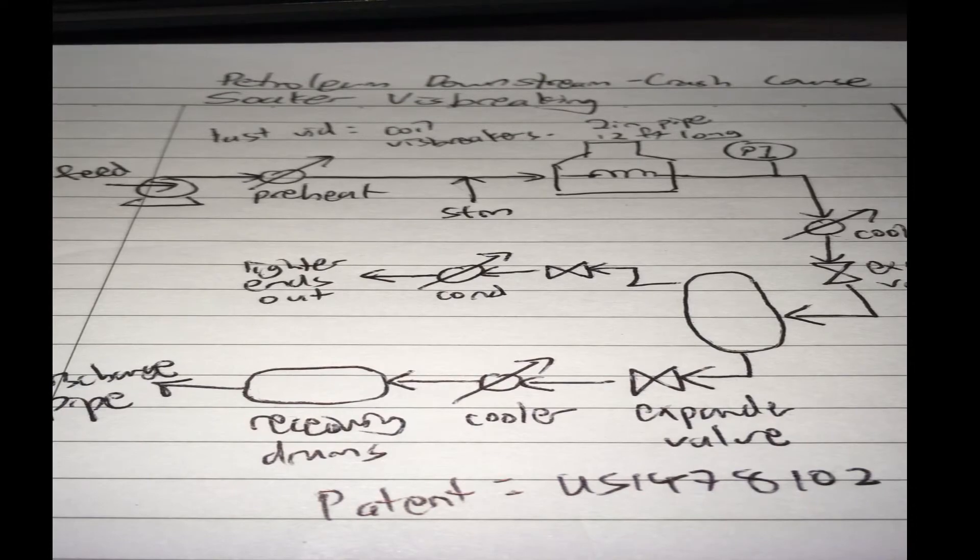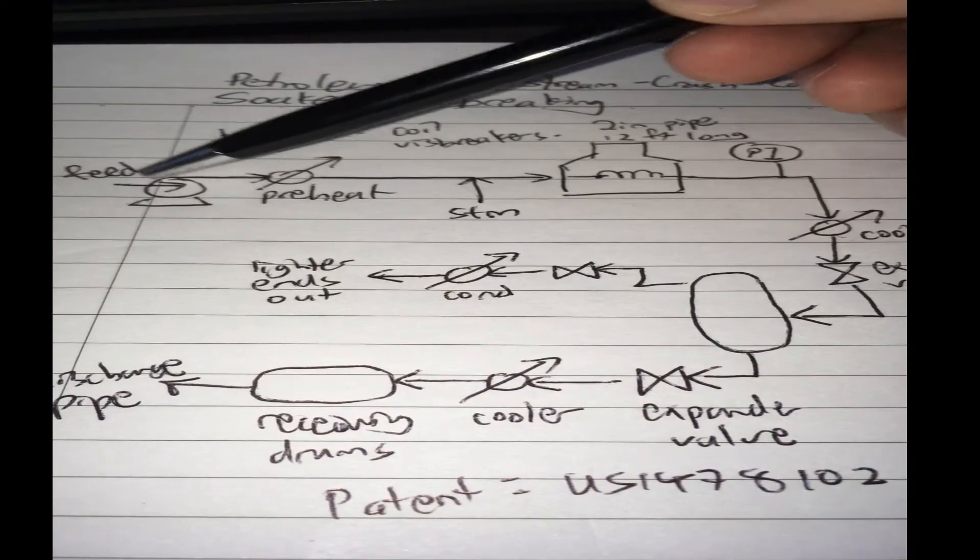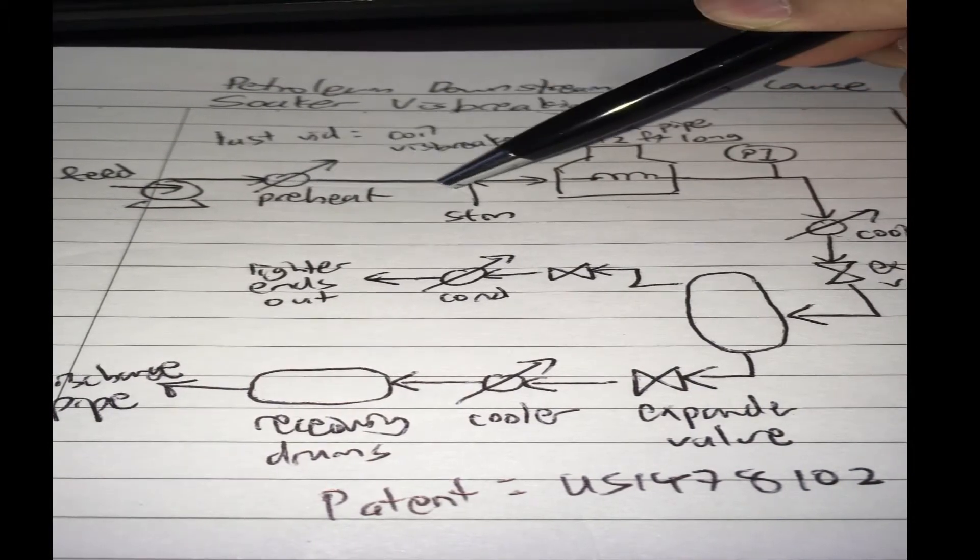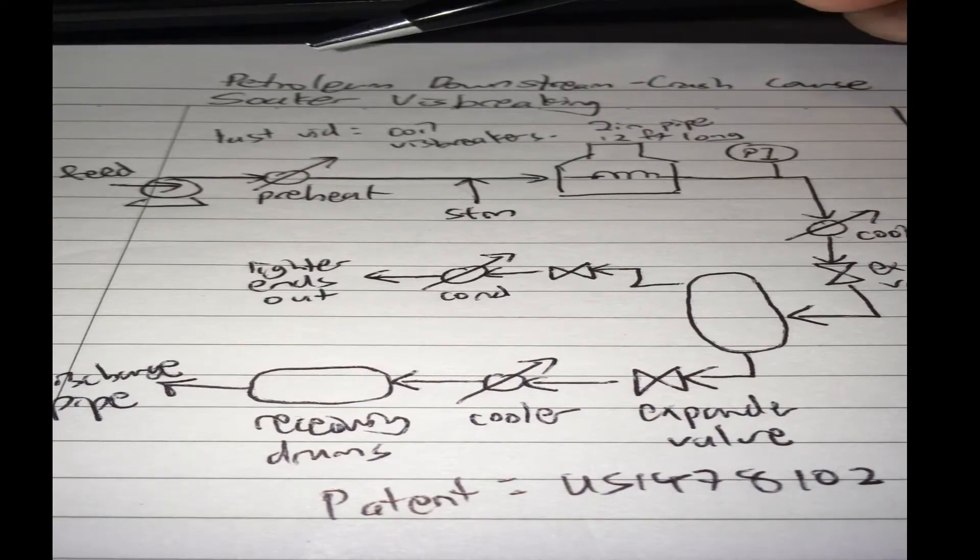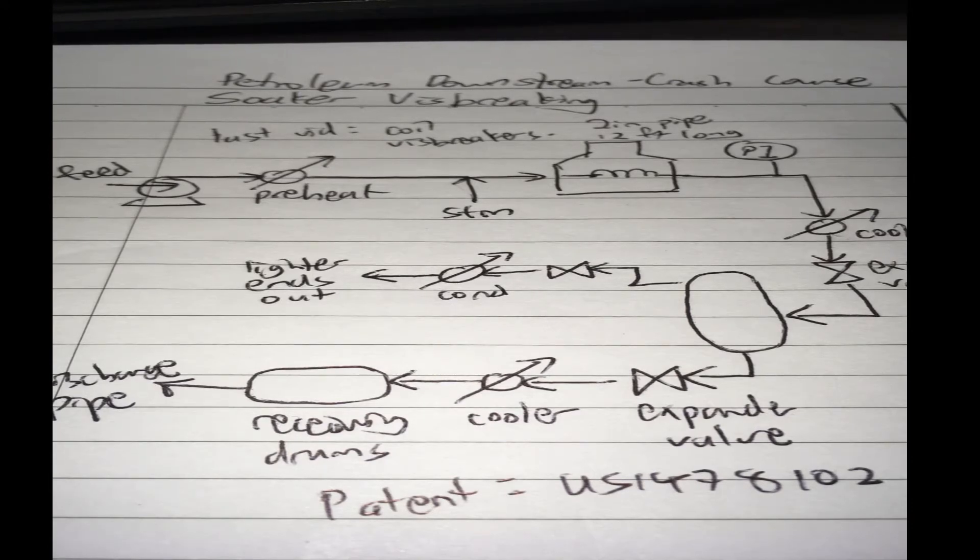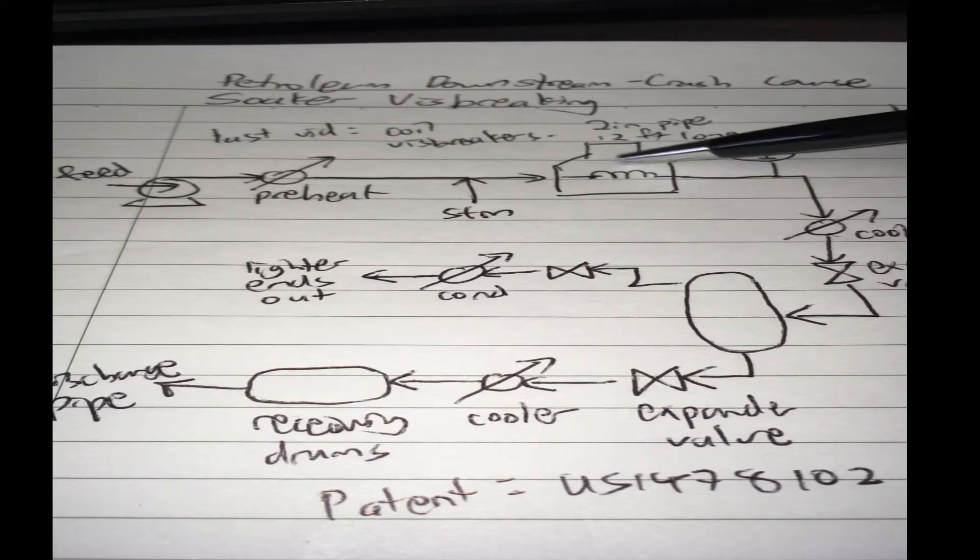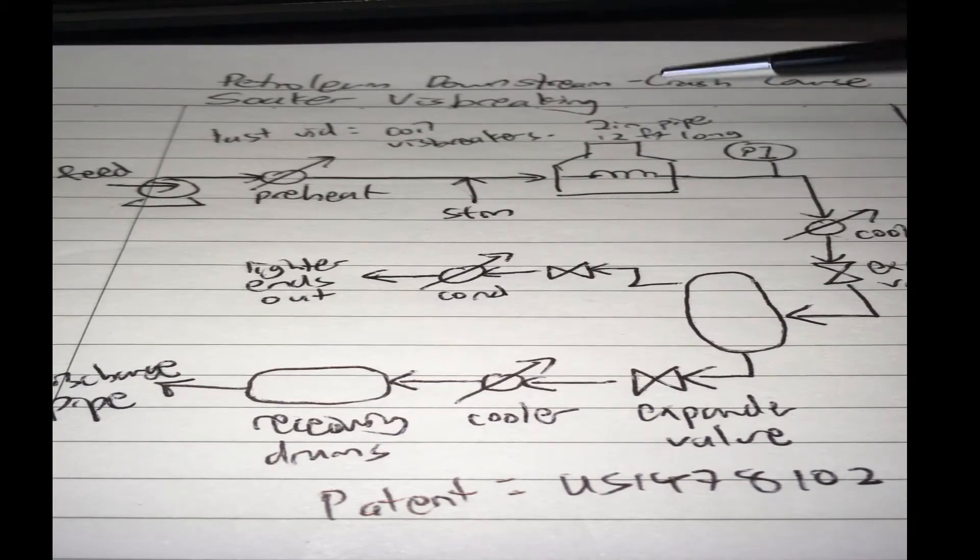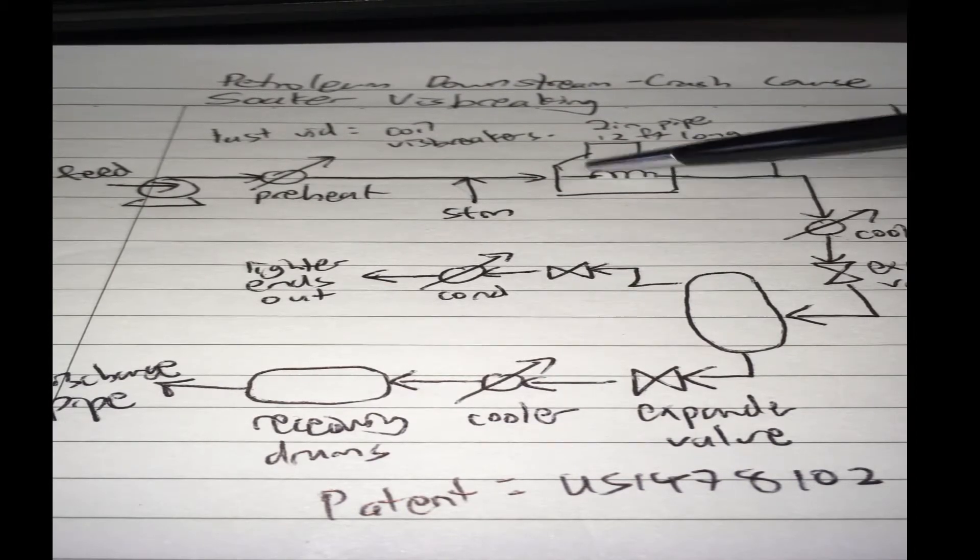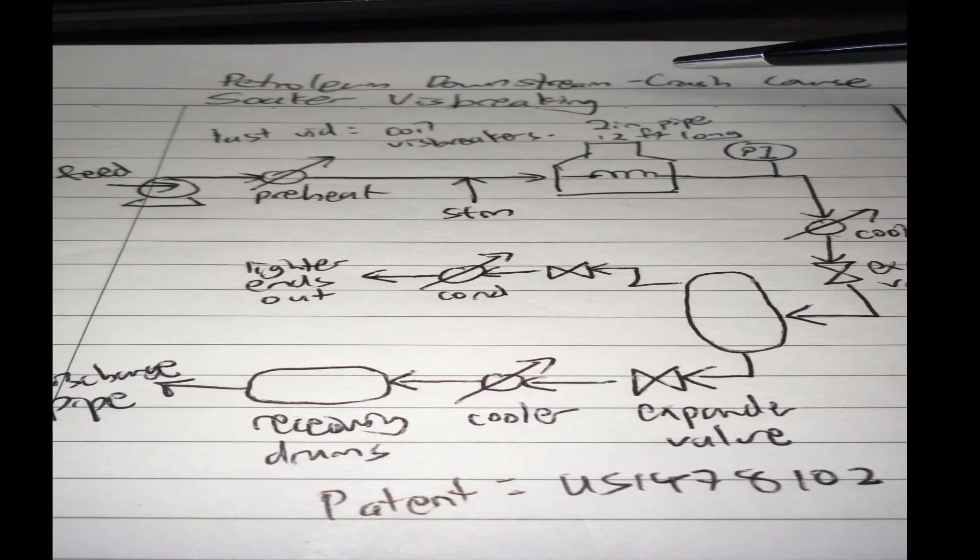First, we have vacuum residue feed being pumped by a pump. You preheat it and mix some steam with it, maybe about 9% volume steam per volume of oil or 9% weight of steam per weight of oil. Then you have 12 parallel tubes inside this heater, which is a furnace, and that's where the cracking is going on.